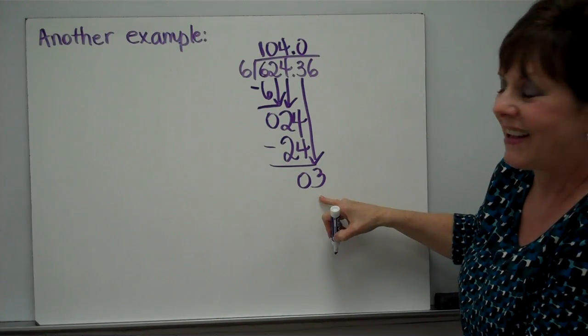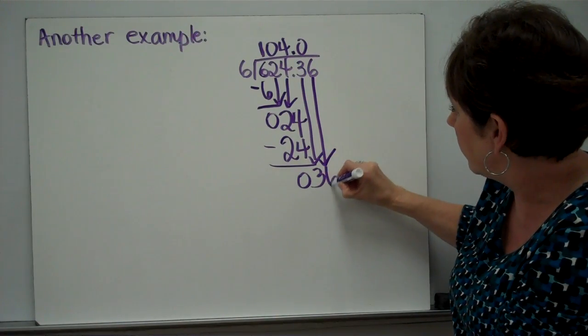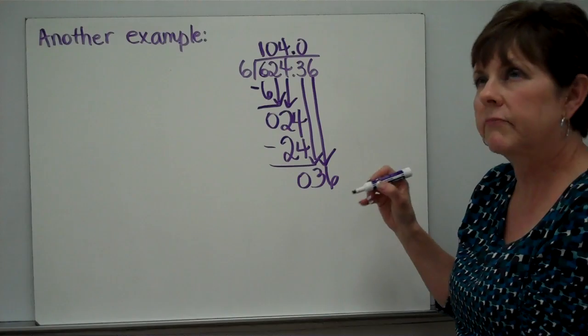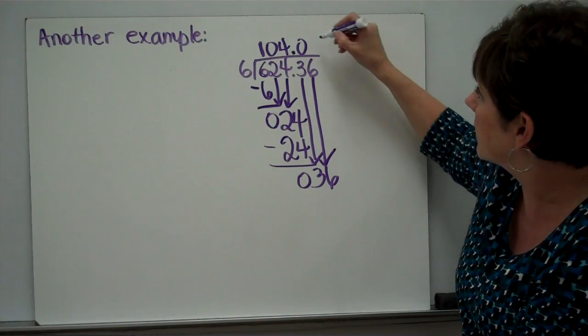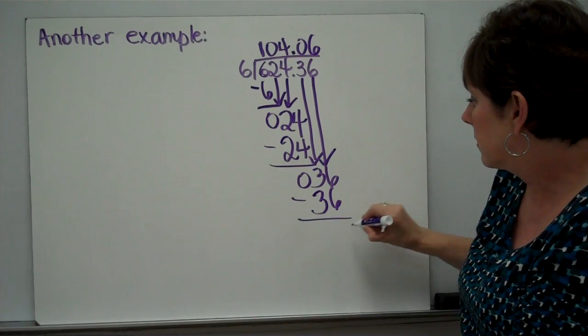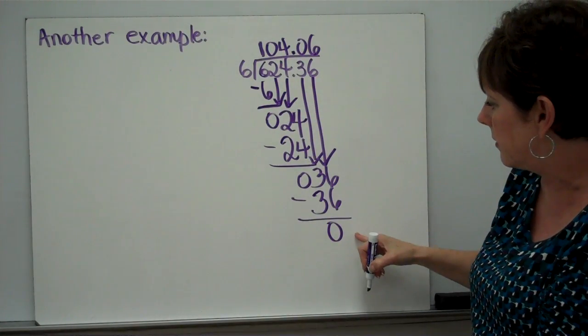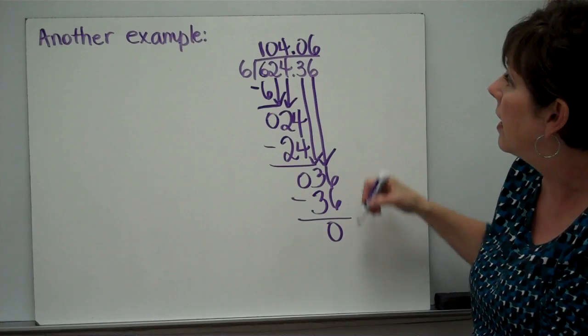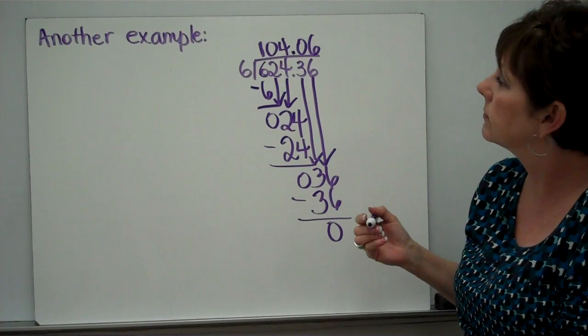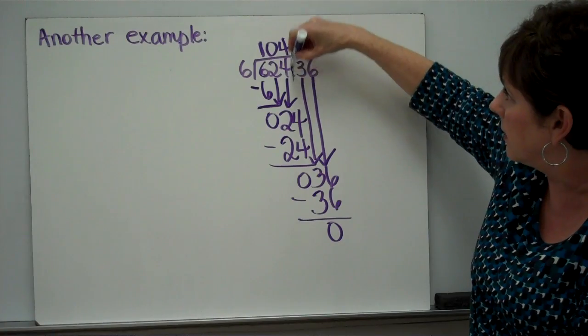We've already compared. So, we bring down. And we've got a 6 here. How many times can 36 be divided by 6? If I do the math, let's try 6. 6 times 6 is 36. Subtract. We get 0. Compare. Can 0 be divided by 6? No. Is there anything left to bring down? Nope. Nothing left to bring down. So, our answer is 104.06. And there's our decimal point. You'll notice it is right above the decimal point there.